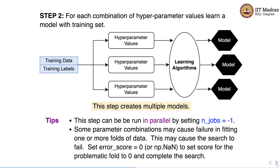There is an important caution here: some parameter combinations may cause failure in fitting one or more folds of data, which may cause the entire search to fail. In such cases, set error_score to zero or np.nan. This sets the score for problematic folds to zero and allows the search to complete. So keep in mind: run jobs in parallel with n_jobs=-1, and handle errors in particular folds with error_score.